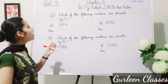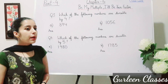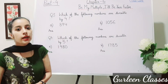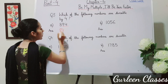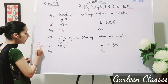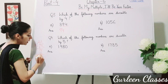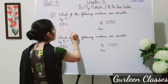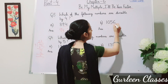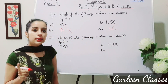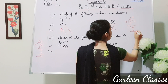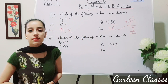Question number 3: Which of the following numbers are divisible by 4? A number is divisible by 4 if its last two digits are divisible by 4. Part A: 894 — last two digits are 94. Dividing 94 by 4 gives remainder 2, so 94 is not divisible by 4, and 894 is not divisible by 4. Part B: 1056 — last two digits are 56. Dividing 56 by 4 gives remainder 0. So yes, 1056 is divisible by 4.